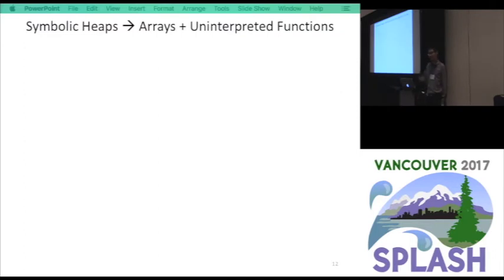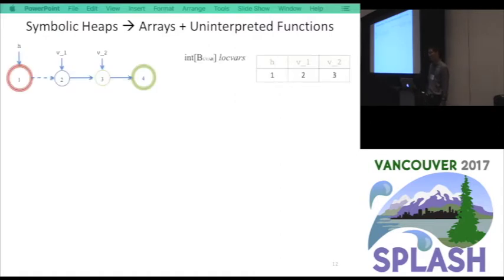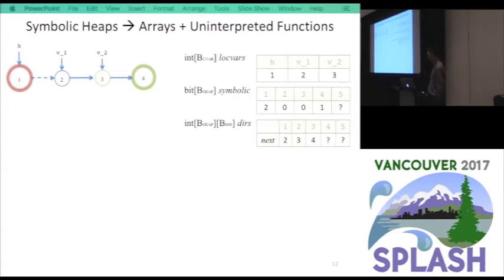The idea is to encode the symbolic heap using arrays and uninterpreted functions. If we have a symbolic heap, we can represent it using a bunch of arrays. The location variable array maps every variable to the ID of the symbolic node it points to. And the symbolic is another array, tells us the nodes are symbolic or not. One means the node is symbolic, and zero means the node is concrete, and two means it's semi-symbolic. One is semi-symbolic because it points to a list segment. And next is a pointer field, two-dimensional array, which maps every node and a field to a different node. We define a lot of other arrays so that we can fully characterize the symbolic heap, and we can simulate the execution of statements using arrays.